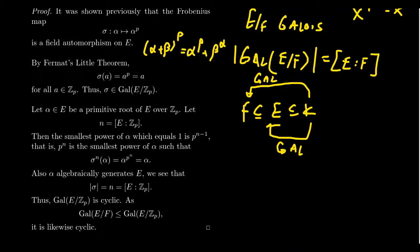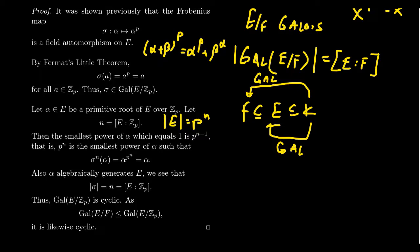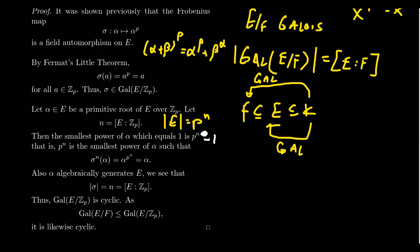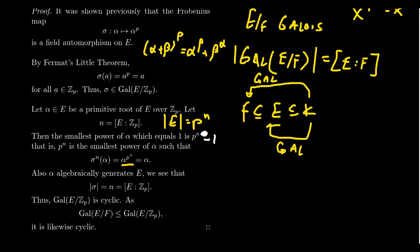E is the finite field of order P to the N. Since alpha is a primitive root and since the field has order P to the N, it turns out that the order of alpha, when we think of the group E star, is going to be P to the N minus 1. In particular, if you then raise alpha to the power P to the N, you're going to get back just alpha itself. So alpha to the P to the N is going to give you alpha.